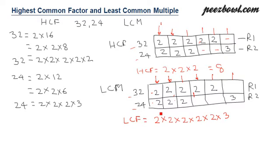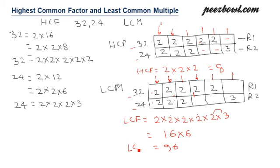So we multiply 2 × 2 × 2 × 2 = 16, then 3 × 2 = 6, which gives 96. The LCM of 32 and 24 is 96. I mistakenly wrote LCF earlier, but it is actually LCM. Thank you for watching.